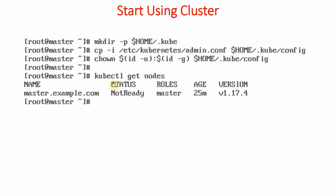Running 'kubectl get nodes' shows that master.example.com has the role of master and the correct Kubernetes version, but it is showing status 'NotReady'. This means the master is installed — we will next see why it is giving the NotReady message and when it will show Ready.